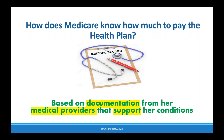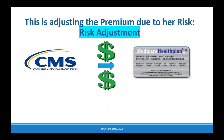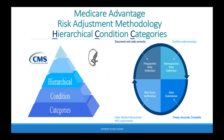Ozzie is healthy — sees his physician once a year, clean bill of health. Harriet is different: she has diabetes and uses insulin, COPD requiring home oxygen, and AFib requiring anticoagulant therapy with regular monitoring. Harriet is costlier to cover. So how does Medicare know how much to pay the health plan? It's based on documentation from her medical providers that support her conditions. CMS pays the health plan more for Harriet based on her health conditions — this is risk adjustment. The Medicare Advantage risk adjustment methodology is HCC, or Hierarchical Condition Categories.